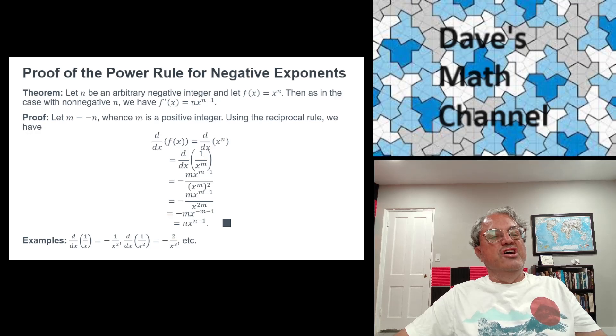That's what we have on the third line. We can do a little simplification. When you raise a power to another power, you multiply the powers. So the denominator is x^(2m). Now we have -mx^(m-1)/x^(2m). We can subtract 2m from the exponent of the numerator, giving us -mx^(-m-1). Replacing -m with n, we get nx^(n-1). Voila!